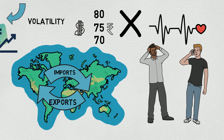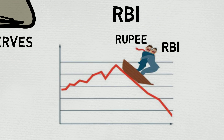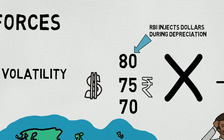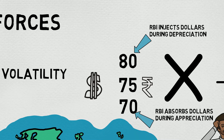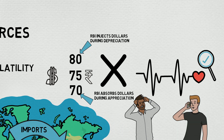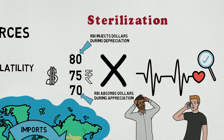So RBI uses its foreign exchange reserves to stabilize the currency rates. The goal of RBI is to keep the dollar-rupee exchange rate within a limited range of fluctuation. If the dollar becomes pricier, RBI injects dollars into the market to increase its supply; and when the dollar becomes cheaper, RBI absorbs the excess dollars from the market. The effect is that prices are stabilized. This exercise by RBI is known as sterilization.